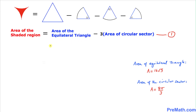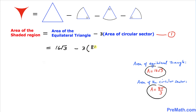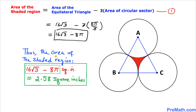Using equation number one, the area of the shaded region equals 16√3 minus three times (8π/3). Simplifying, the threes cancel, giving us 16√3 − 8π square inches. Using a calculator, this is approximately equal to 2.58 square inches.